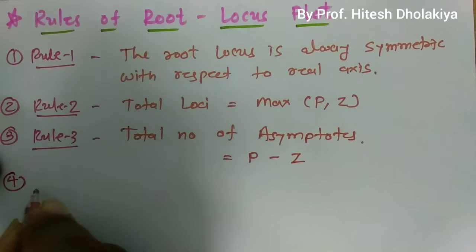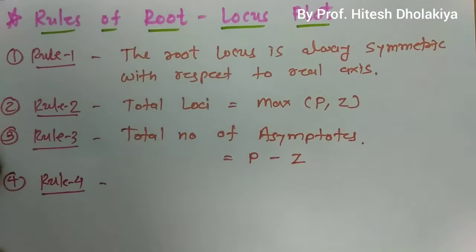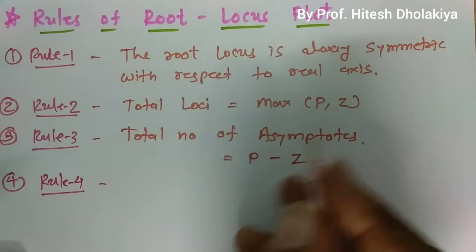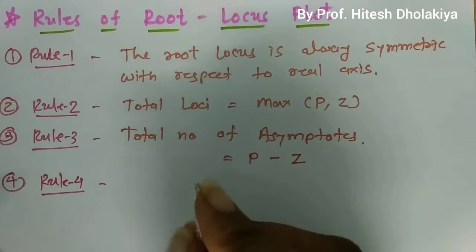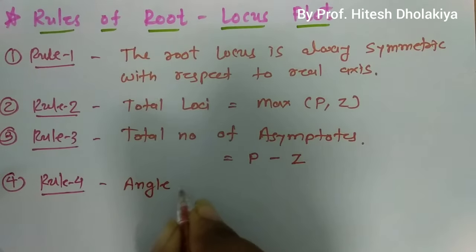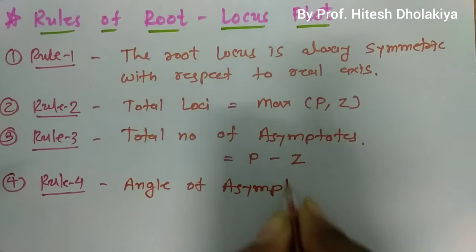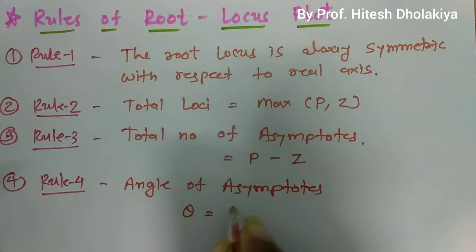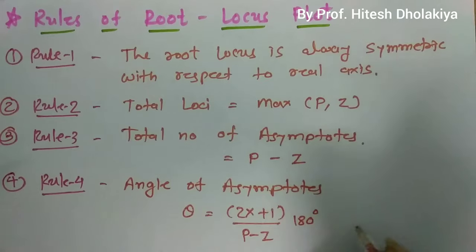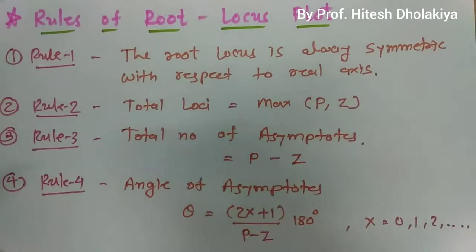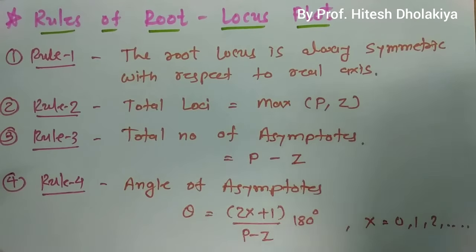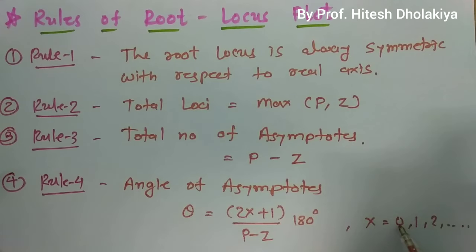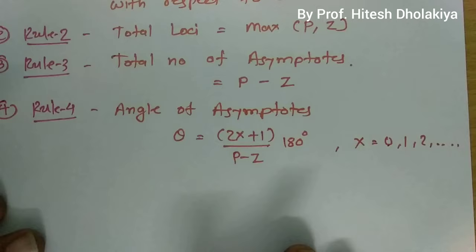The fourth rule is to find the angle of asymptotes. If there are two asymptotes in the system, we calculate their angles using the formula: theta equals (2x + 1) divided by (poles minus zeros), multiplied by 180 degrees, where x = 0, 1, 2, ... based on the number of asymptotes. For two asymptotes, substitute x = 0 and x = 1 to get two different angles.